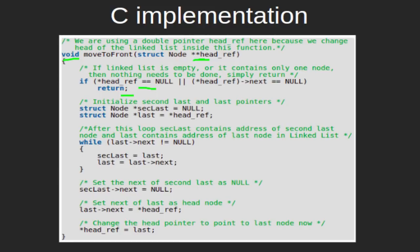After that, we declare two pointers sec_last and last. Sec_last is initialized with null and last is initialized with the head of the linked list. We then start traversing the linked list. After each iteration, we update the sec_last and last pointers to store the second last node and last node of the linked list respectively. After this traversal, sec_last will contain the second last node and last will contain the last node of the given linked list.